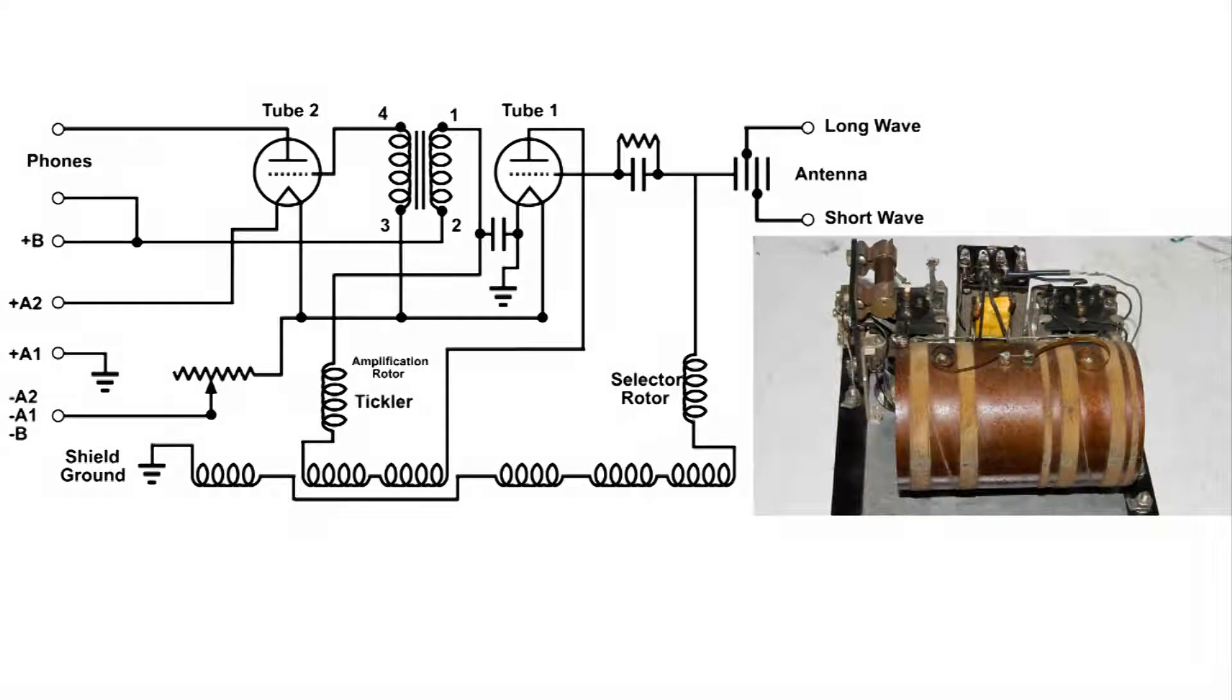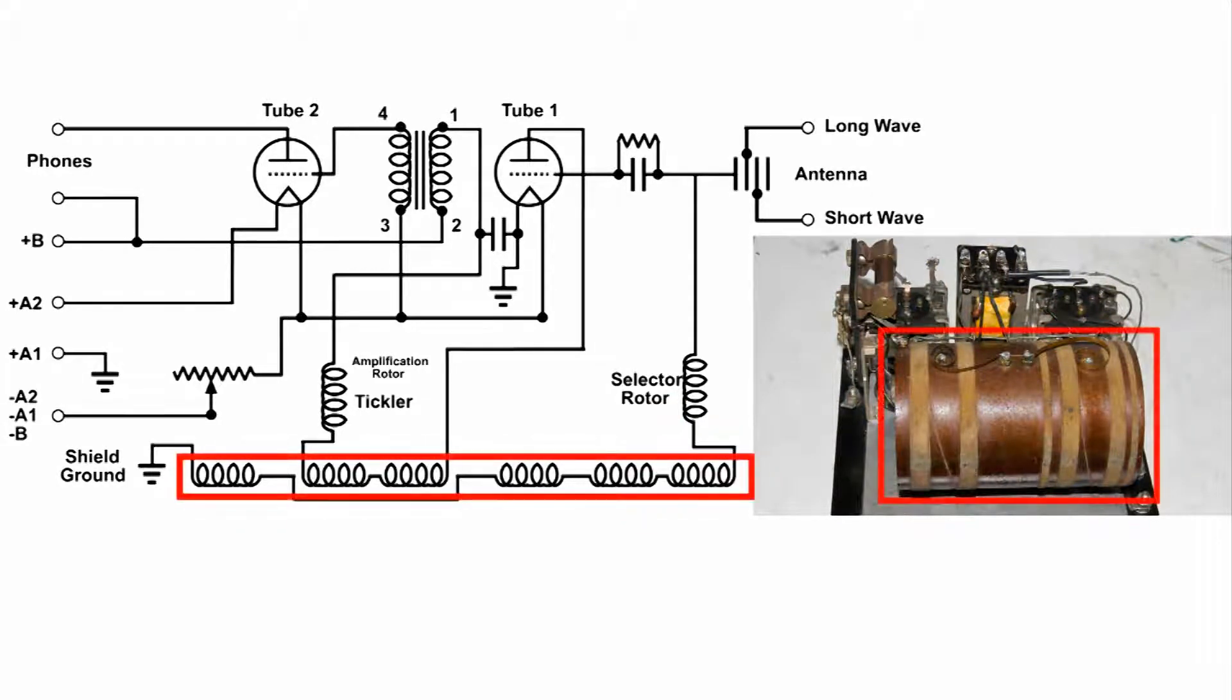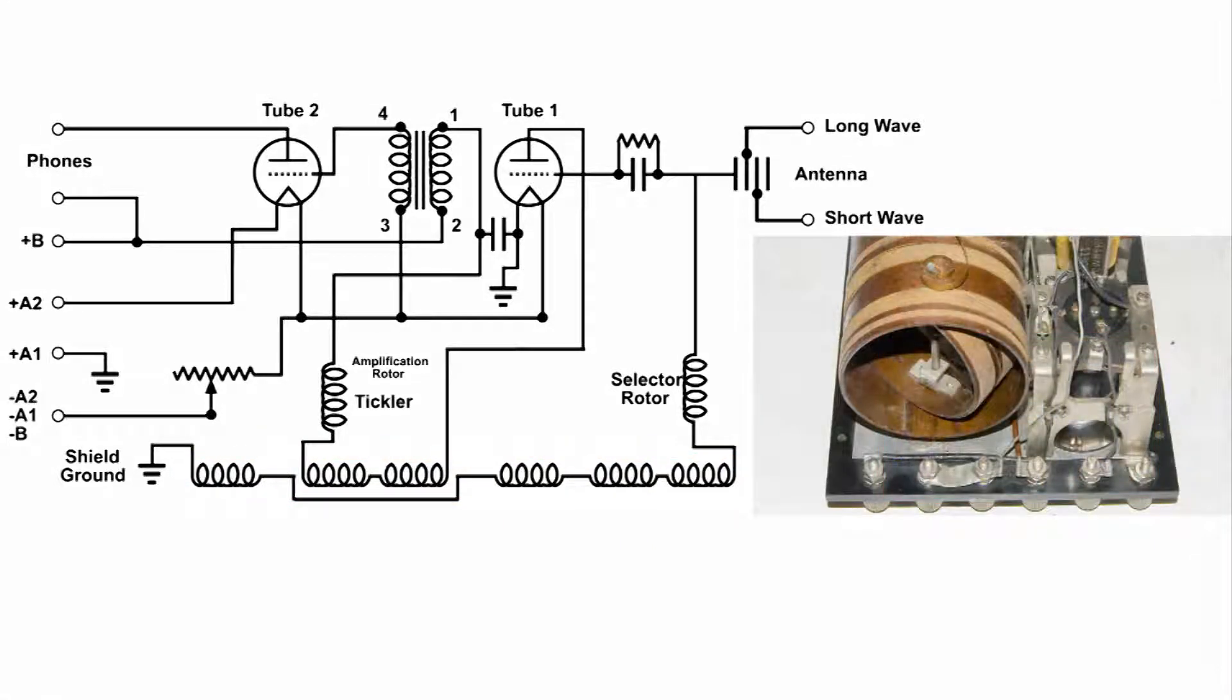Here is another view of the radio where you can see all six of these coils. This is the other side of the radio, and this is the tickler coil which controls the regenerative feedback, or the feedback of this regenerative circuit.